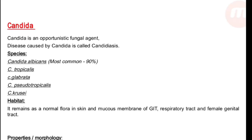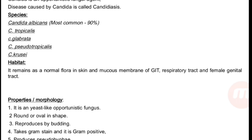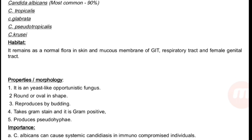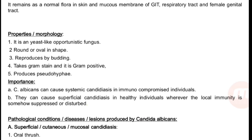Opportunistic fungal agents — important ones are Candida albicans, Cryptococcus neoformans, and in some cases Aspergillus fumigatus, which causes fungal disease. Also Pneumocystis carinii, which causes pneumonia in immunocompromised patients. Candida is an opportunistic fungal agent. The disease caused by Candida is candidiasis. Species: Candida albicans is most common — 90%. Others include C. tropicalis, C. glabrata, C. pseudotropicalis. Habitat: it remains as normal flora of skin and mucous membrane of the GIT, respiratory tract, and female genital tract. Morphology: yeast-like, round or oval, reproduces by budding. Gram stain: gram positive.